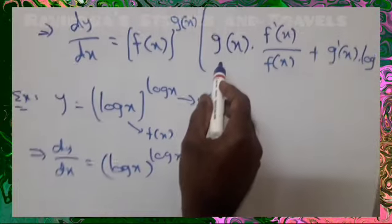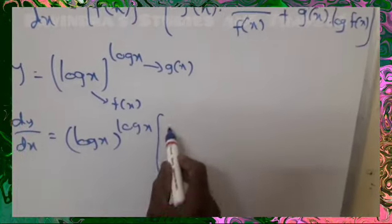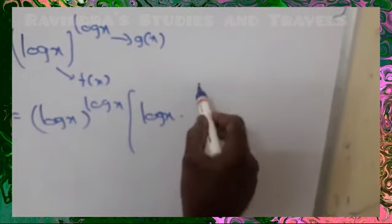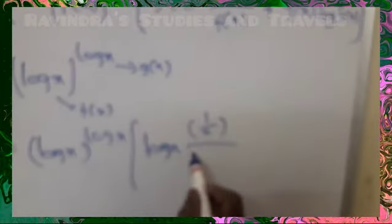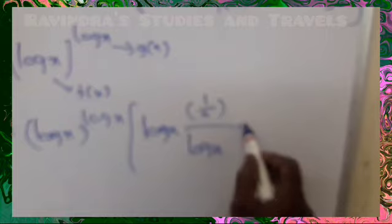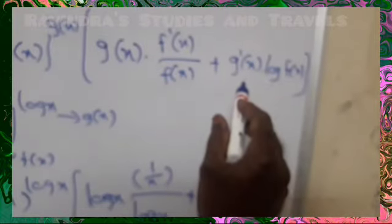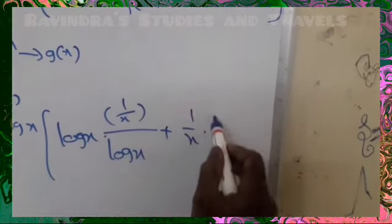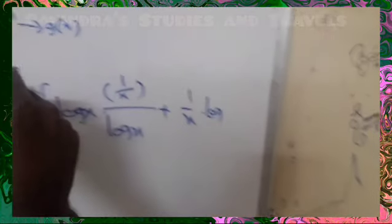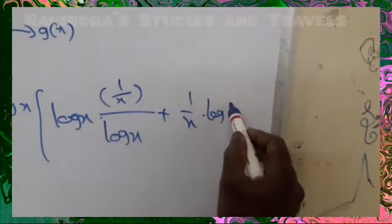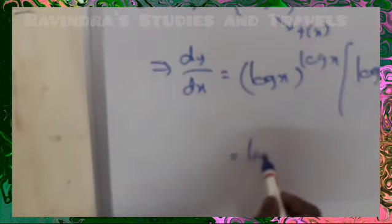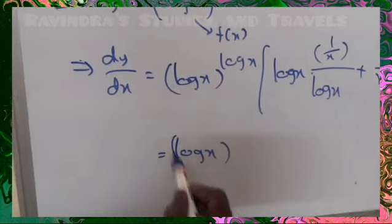(log x)^(log x) times [log x · (1/x)/log x + (1/x) · log(log x)]. Here g(x) is log x, f'(x) is the derivative of log x which is 1/x, f(x) is log x. Plus g'(x), where g(x) is log x so g'(x) is 1/x, times log of f(x) which is log(log x). Therefore the answer is (log x)^(log x)...